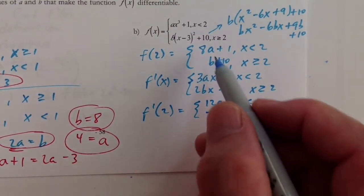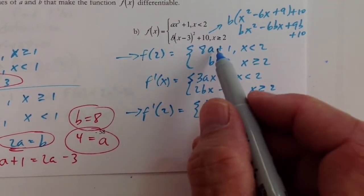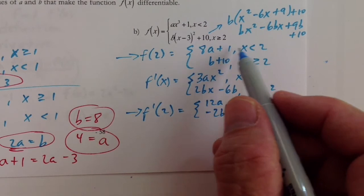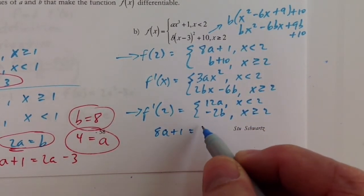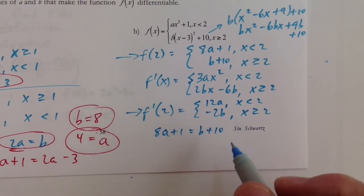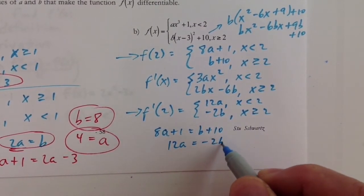So the two equations are continuous and differentiable have to be the same. So continuous at 2 would be 8a plus 1 has to equal b plus 10, and we have 12a has to equal negative 2b.